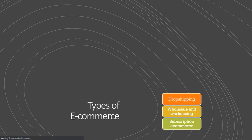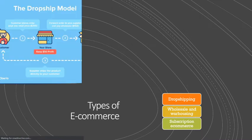In the drop shipping model, a customer places an order and pays a retail price — say, 200 rupees — to the store. The store forwards the order to the supplier and pays a wholesale price of 150 rupees. The supplier then ships the product directly to the customer. The storekeeper keeps 50 rupees as profit. This is a very popular e-commerce model.